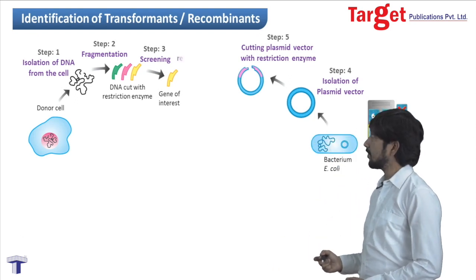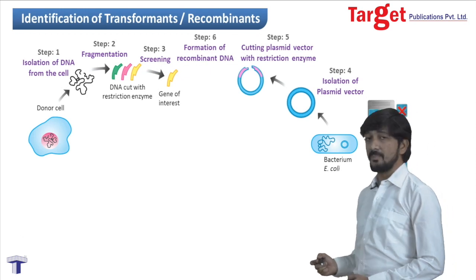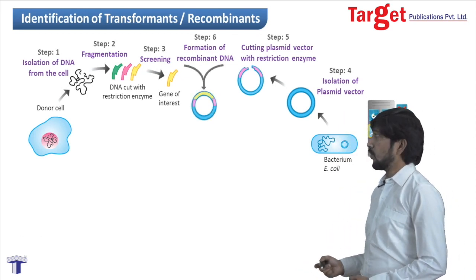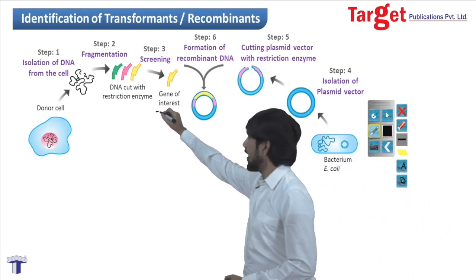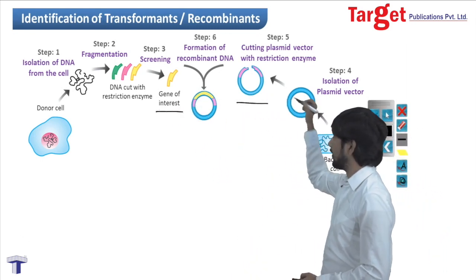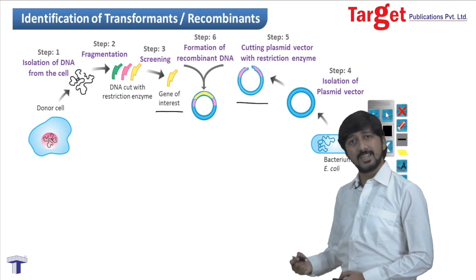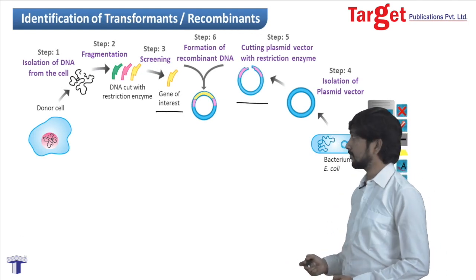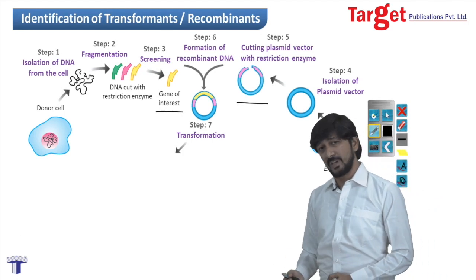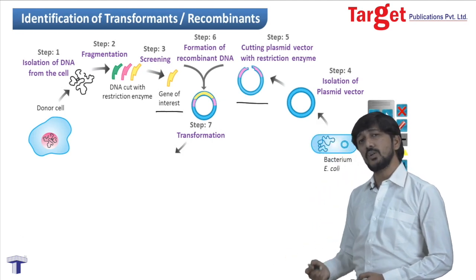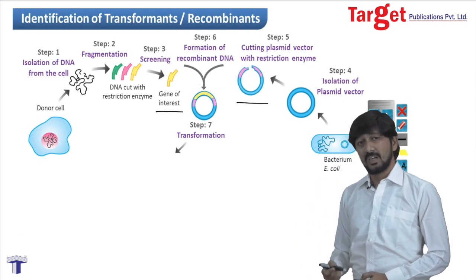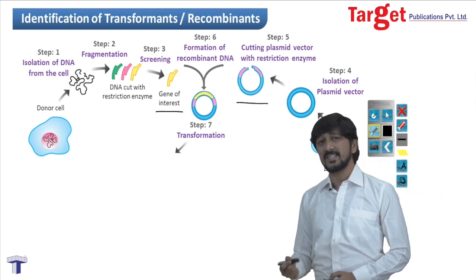The next step is formation of recombinant DNA. In this step we join our gene of interest with the cut plasmid using the enzyme ligase. The next step is transformation, in which we transfer the recombinant DNA into the host cell.